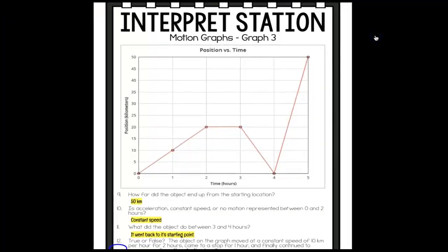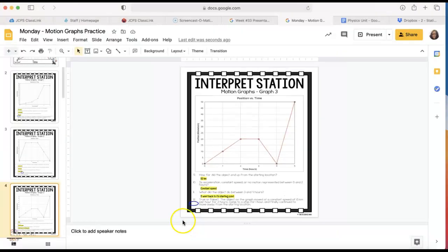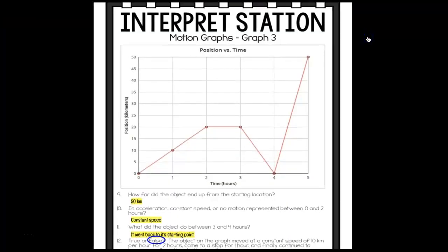And then true or false, the object on the graph moves at a constant speed of 10 kilometers per hour for 2 hours. So first hour went 10, second hour went 10, so that's true so far. Came to a stop for an hour, that's true. And finally continued to move away from the starting location. No, it did not. It went back to the starting location and then moved away. So that is false. This is what you should have for the third motion graph.